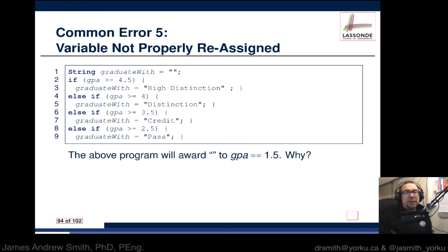Except there's a problem. If the student has a GPA of 1.5, where does it fall into here? It doesn't get covered by any of these conditions. However, when we look at graduateWith as the variable, it's going to be empty. It'll be a blank string.